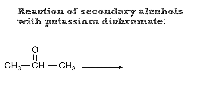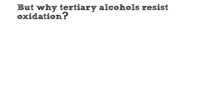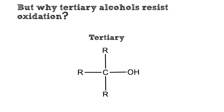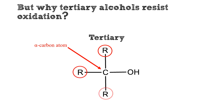For the secondary alcohols, they are oxidized into ketones. But why are the tertiary alcohols resistant to oxidation? The tertiary alcohols are resistant to oxidation because the alpha-carbon atom that carries the hydroxyl group doesn't have a hydrogen attached to it, but instead is bonded to three carbon atoms.